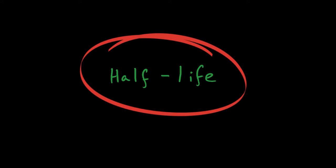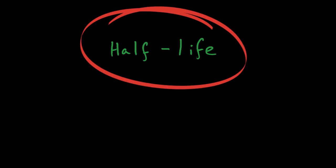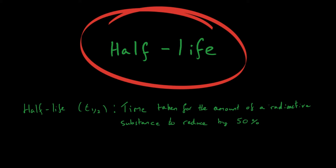So what actually do we mean by the half-life of a radioactive substance? Well, the half-life (sometimes written with a symbol t with a small subscript half) is the amount of time it takes for the total amount of a radioactive substance to go down by a half. That is the time taken for the amount of a radioactive substance to reduce by 50%.